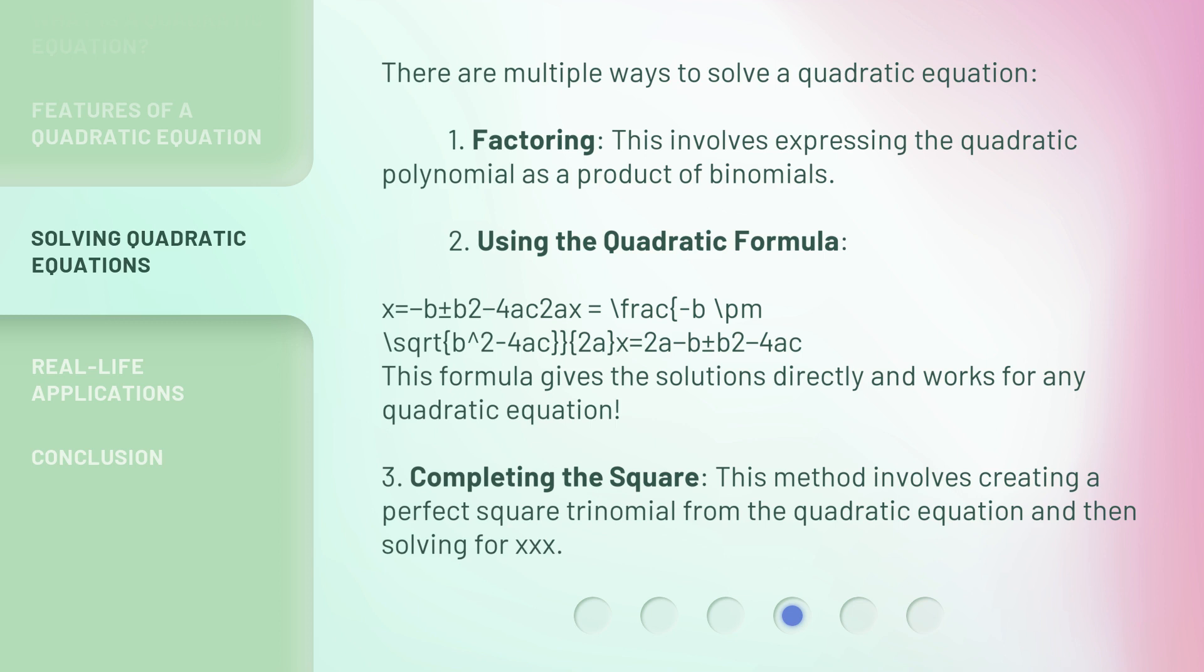2. Using the Quadratic Formula. x = (-b ± √(b² - 4ac)) / 2a. This formula gives the solutions directly and works for any quadratic equation.